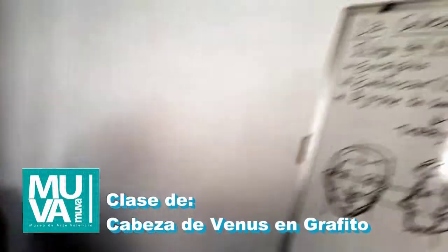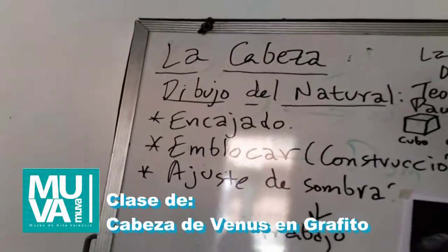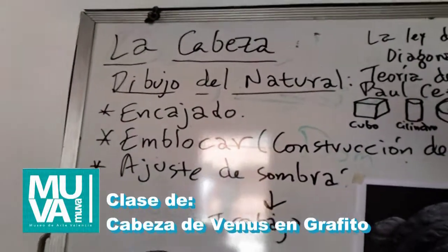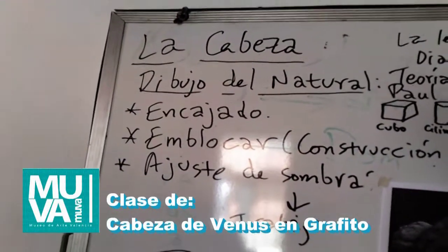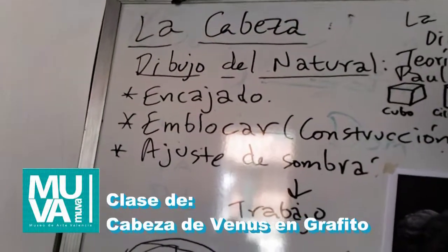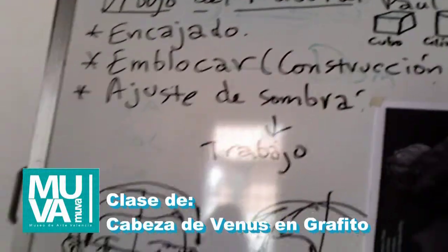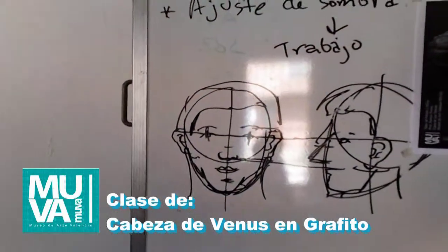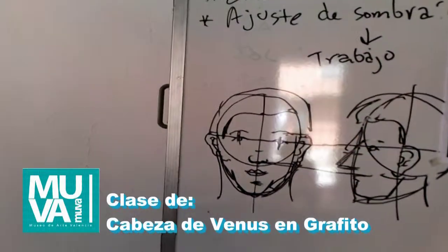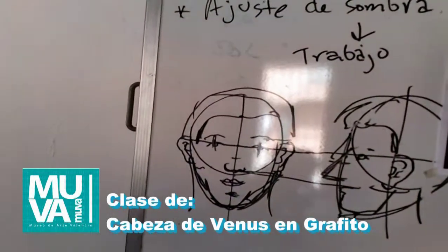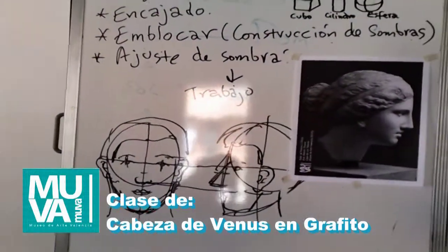¿Qué tenemos para hoy en esta clase? Vamos a trabajar sobre lo que sería la cabeza del dibujo natural. Tenemos tres pasos para lograr nuestro objetivo: uno es el encajado de la figura en el papel sobre la superficie que queremos plasmar el trabajo, el emblocado o construcción de la sombra, y el ajuste de esa sombra para culminar el trabajo. Cuando hacemos un retrato, ya sea de frente, perfil o tres cuartos, empezamos con unas líneas básicas para distribuir lo que sería el rostro de la cabeza.